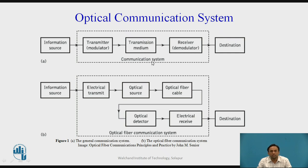The transmission mediums are of two types: wireless communication and wired communication. Depending on the application, the appropriate medium is chosen and the signal is sent to the receiver side. Here the reverse process of modulation is done, which is known as demodulation, and the received signal is given to the destination. This is the basic communication system with three main blocks: transmitter, transmission medium, and receiver.